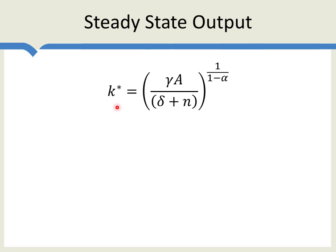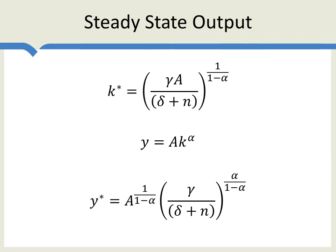From the previous slide, we know the steady-state level of capital K*. We also know that output per worker equals A times the capital-labor ratio to the power of alpha. Substituting K* into the production function gives us the steady-state level of output per worker. Combining the A terms inside and outside the parentheses, this is the steady-state output per worker given by the Solow model — it depends on these fundamental factors.